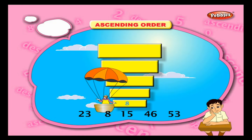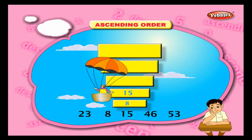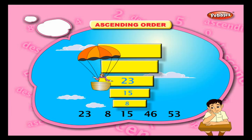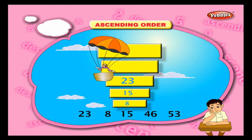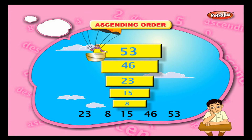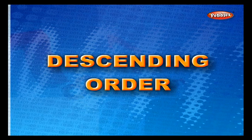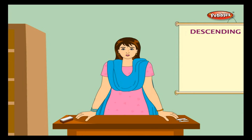First comes 8, as it is the only one-digit number. Next comes 15, with one ten and five ones. Then 23, with two tens and three ones. Next, 46 with four tens and six ones. Finally, 53 with five tens and three ones — the highest number of tens.